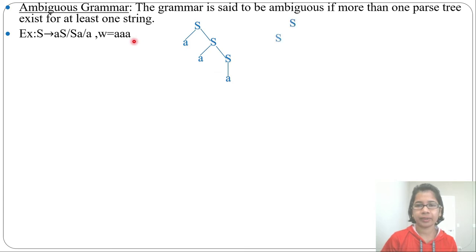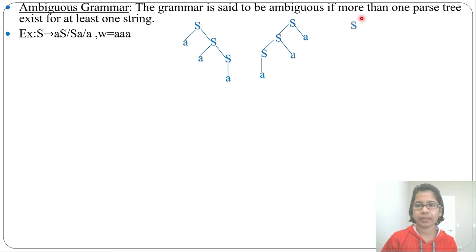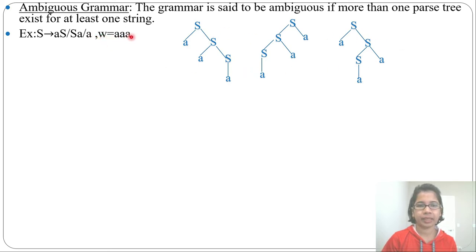You can design the parse tree in a different way also. From S you can derive aS, then from this S you can derive aS, then again from this S you can derive aS. Let's design another parse tree: from aS you can derive aS, then from this S you can derive aS, then from this S you can derive a. I designed 3 parse trees for the same string 3a, so for this string there are more than one parse tree.